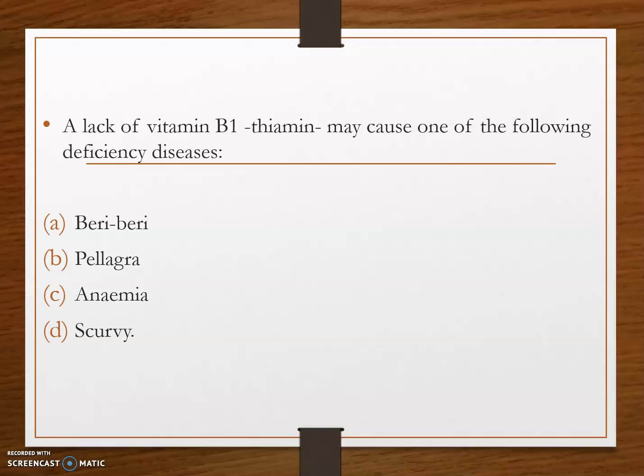Pellagra is a deficiency disease caused due to the lack of niacin, or vitamin B3. Anemia is mainly due to the lack of healthy blood cells — the most common cause is iron deficiency. And scurvy is a deficiency disease caused by the lack of vitamin C.